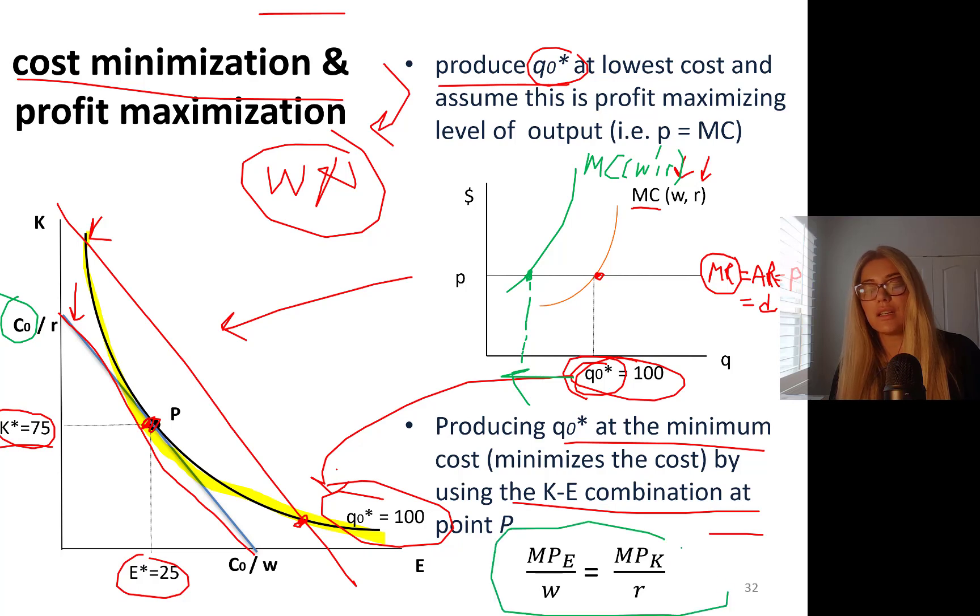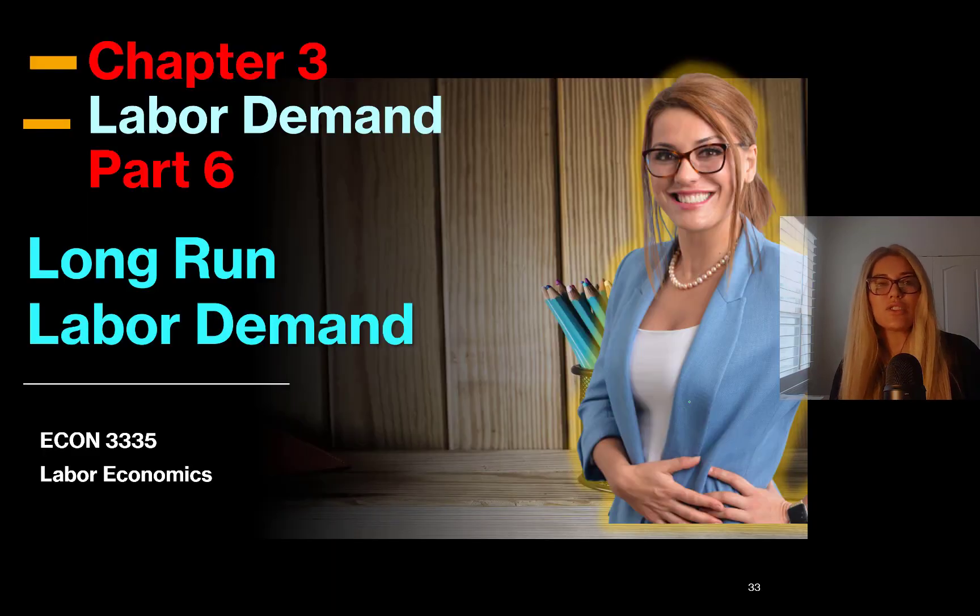The best combination gives you profit maximization result in this case, because we minimize the cost to produce the best level of output. I'll see you in the next part, the long run labor demand.